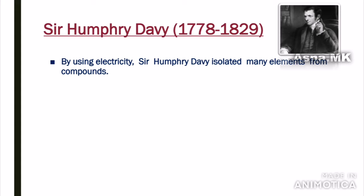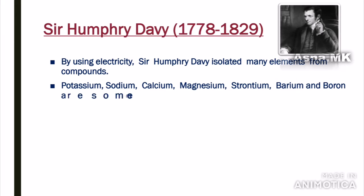He used the process of electrolysis to isolate elements. For example, sodium chloride (NaCl) was separated using electricity. He isolated elements such as Potassium, Sodium, Calcium, Magnesium, Strontium, Barium, and Boron.